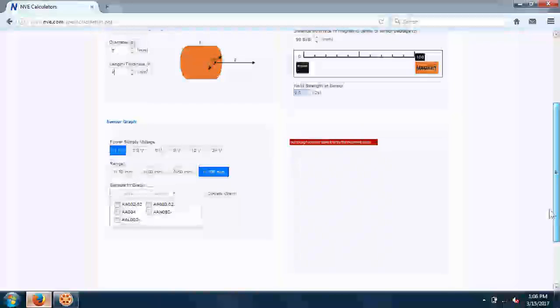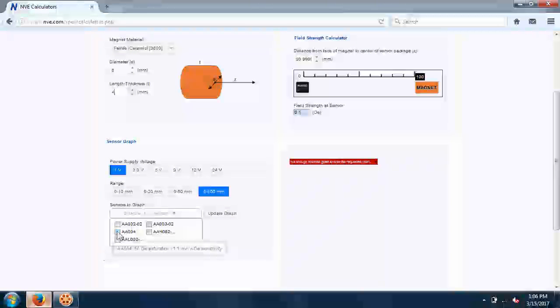We'll select an AA004 sensor, which has medium sensitivity and 5V supply. We'll select 50mm full scale, and here's the sensor output.